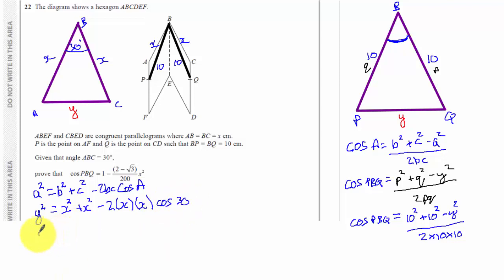X squared plus X squared minus 2 times X times X times the cosine of 30. Now, as I tidy this up, so Y squared, X squared plus X squared is 2X squared. 2 times X times X is 2X squared. So it's minus 2X squared cos 30.